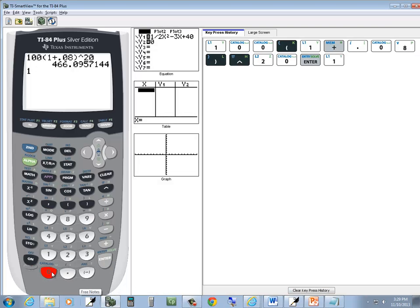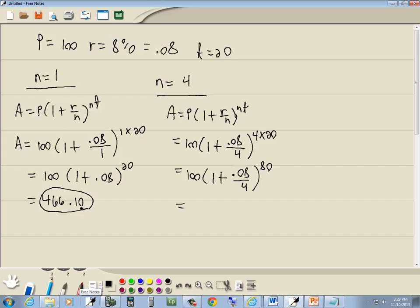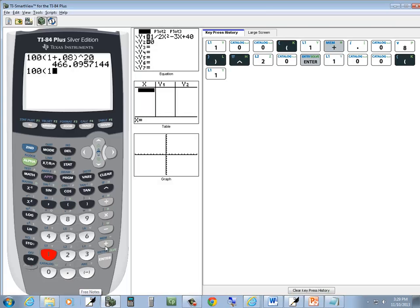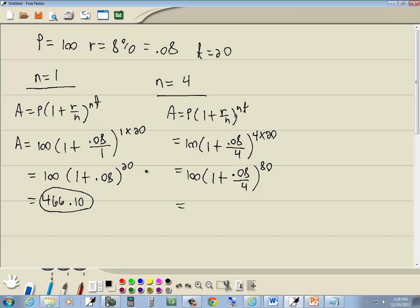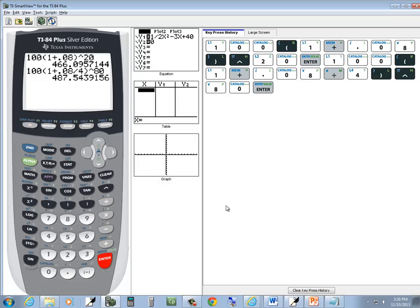So we've got 100, beginning parentheses, 1 plus 0.08, divided by 4, closing parentheses, carat, 80. And enter. And we get 487.54.